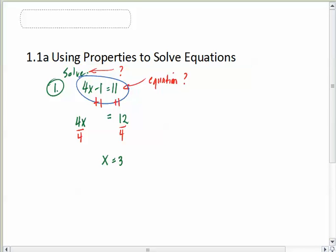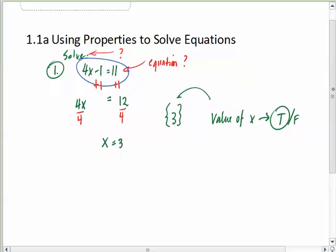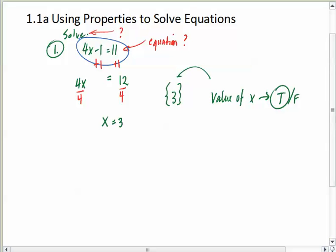So this open sentence is true only for the value 3. When the variable has a value of 3, then this is a true statement. To solve means to find the value of the variable that makes the sentence true. And so the only thing that would actually do that would be the 3. There's the solution set. There is only one value of x that makes it true.